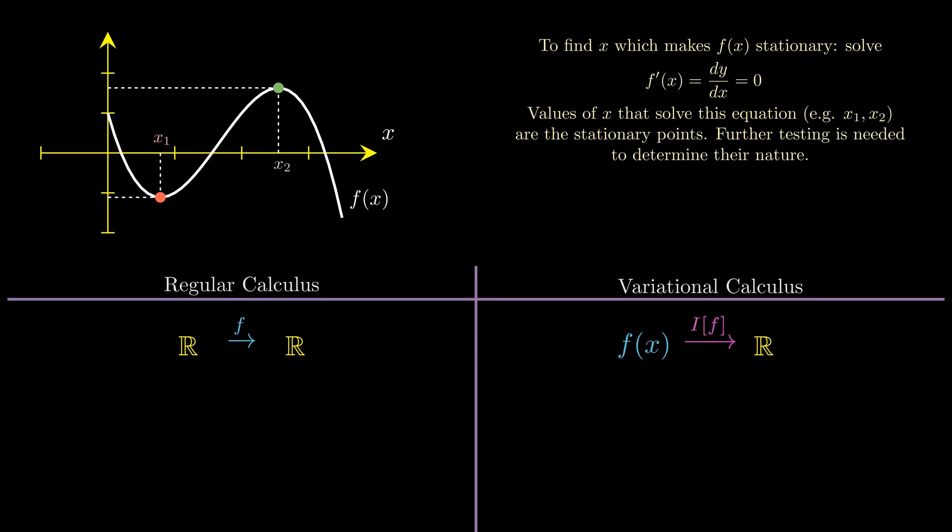Now in regular calculus we can find the stationary values of a function by taking the derivative of that function and setting that derivative to 0. But in calculus of variations we don't find stationary values, we find stationary functions of a functional. To do this we solve a special differential equation which is more complicated than just df/dx = 0. I'll mention this differential equation later in the video.